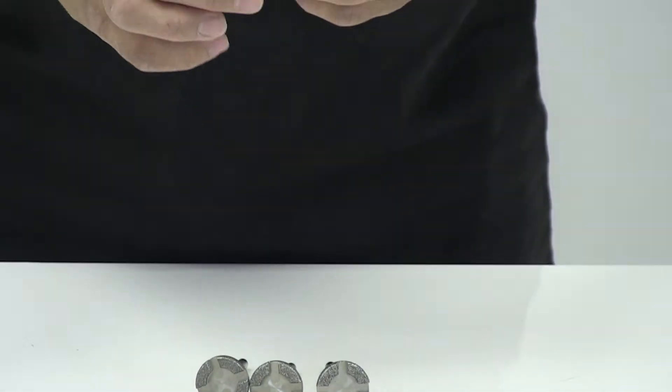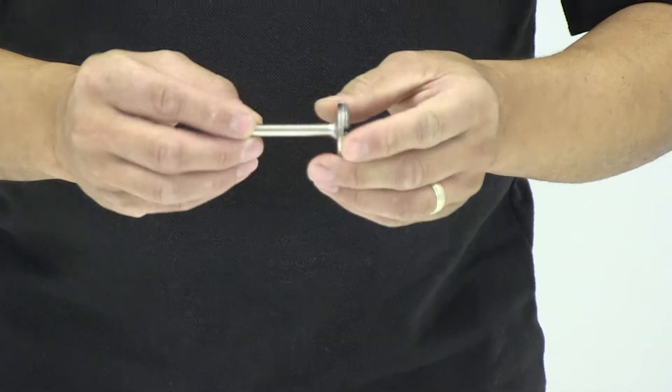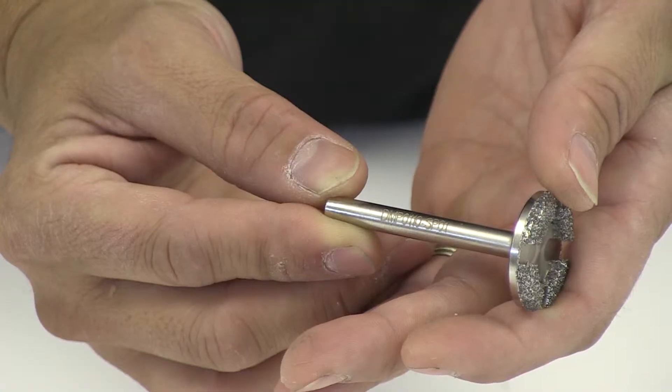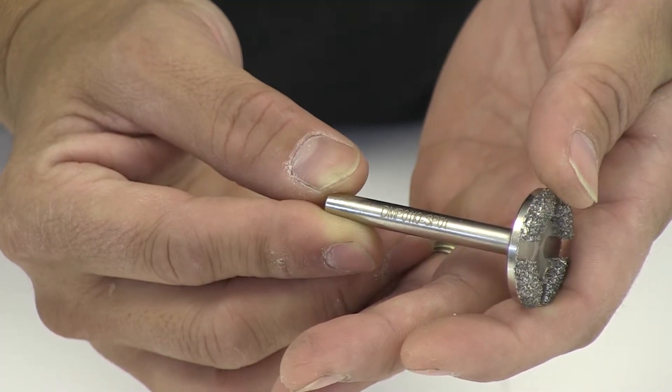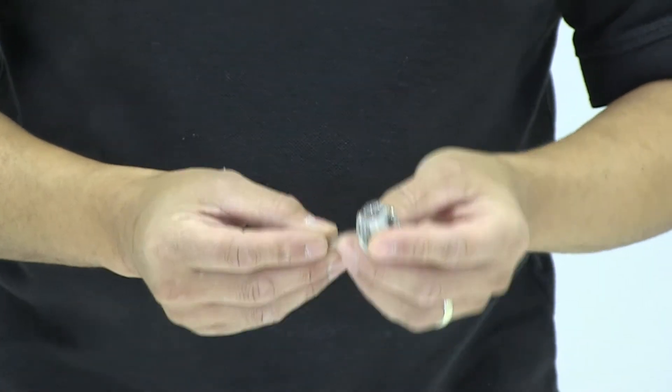Each cutter is a surface planing style head with its part number laser engraved onto the body of it. The first cutter is the SP01.